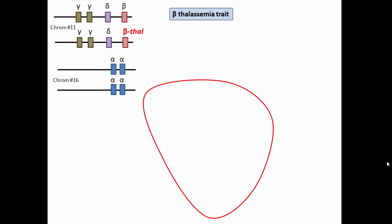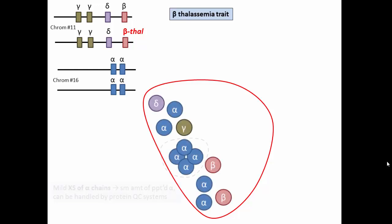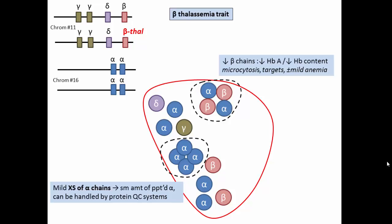In beta thalassemia trait, one beta gene carries one of the hundreds of mutations that can make it underproduce. The alpha genes keep pumping and you end up with a mild excess of alpha chains that aggregate, precipitate, and are proteolyzed by the cell's own protein quality control system before they can do any damage. Ultimately, there is a deficiency of beta globin.